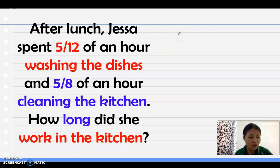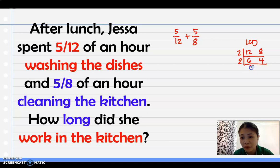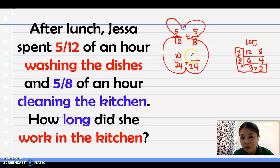You identify first if this is a similar or dissimilar fraction. As you can see, 5/12 and 5/8 are dissimilar, so you need to find the LCD. For the LCD of 8 and 12, that is 24. The new denominator is 24. You use the butterfly method: 24 divided by 12 is 2 times 5 is 10. 24 divided by 8 is 3 times 5 is 15.